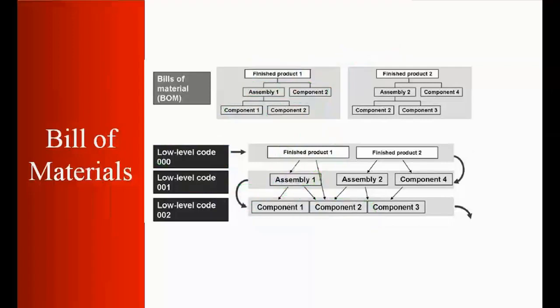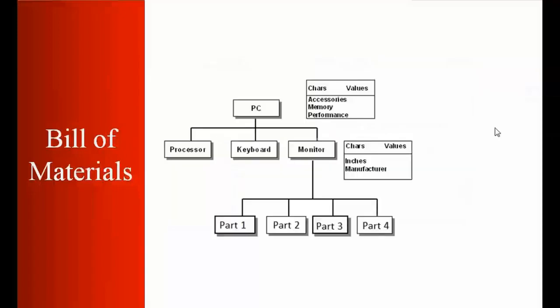Now we'll take another example. If you look at this screen, think about a company who is manufacturing a PC or maybe a laptop. To make the PC, what are the different requirements? If the company wants to make a PC, what do they need? They need a processor, they need a keyboard, they need a monitor. Again, they also manufacture the monitor. But to manufacture the monitor, what do they need? They need part one, maybe another part two, another part three, another part four. So these are all basically called Bill of Material. That means to manufacture a PC, you need all these things and they also have a child level Bill of Material.